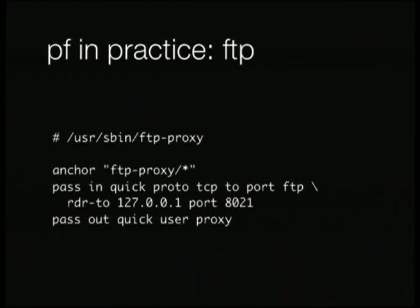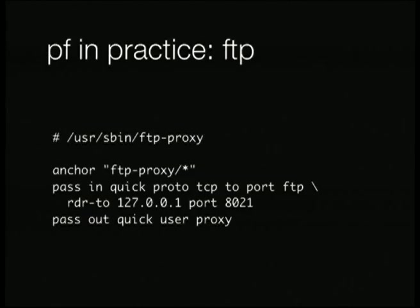For things you want to look deeper into the packet for, we send packets up to userland for handling. The most common case is FTP, because it has the data connection on one port and then tells the client on the other side to connect back in, which doesn't work well with NAT. You run the FTP proxy, create a rule set anchor — in your main rule set you can allow other programs to write sub-rule sets referenced using anchors. You tell PF that FTP proxy will manage an anchor, and once running it will dynamically add and remove rules to set up connections coming from the servers back to the client.